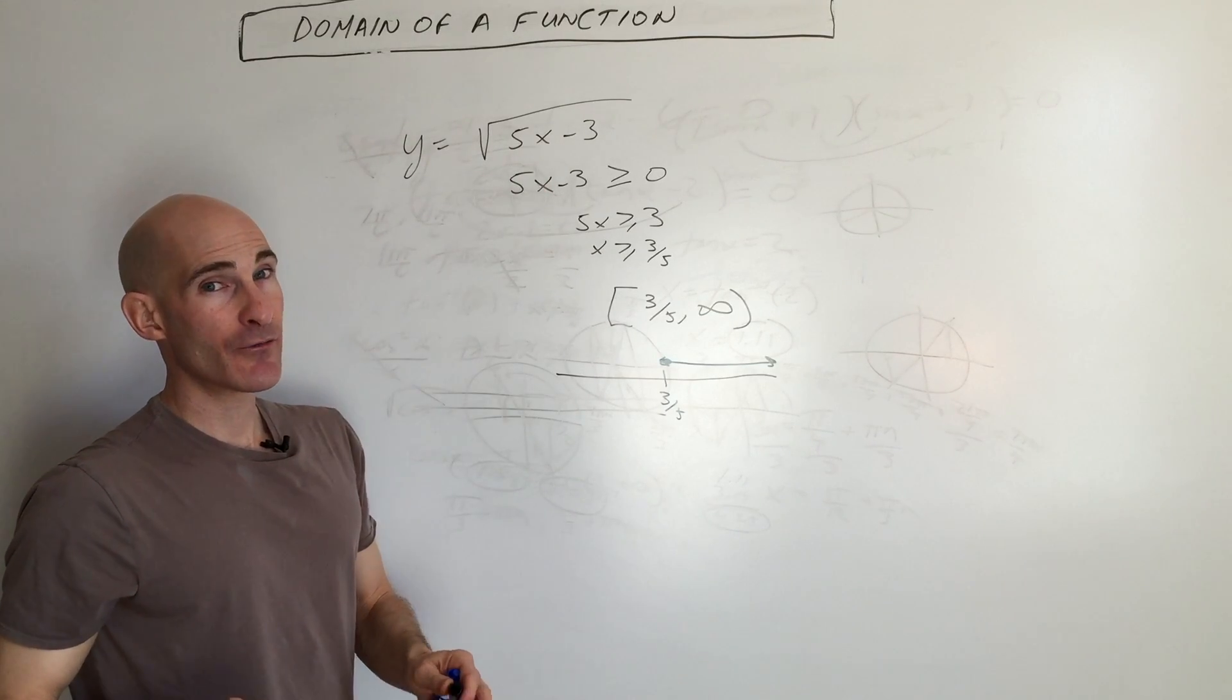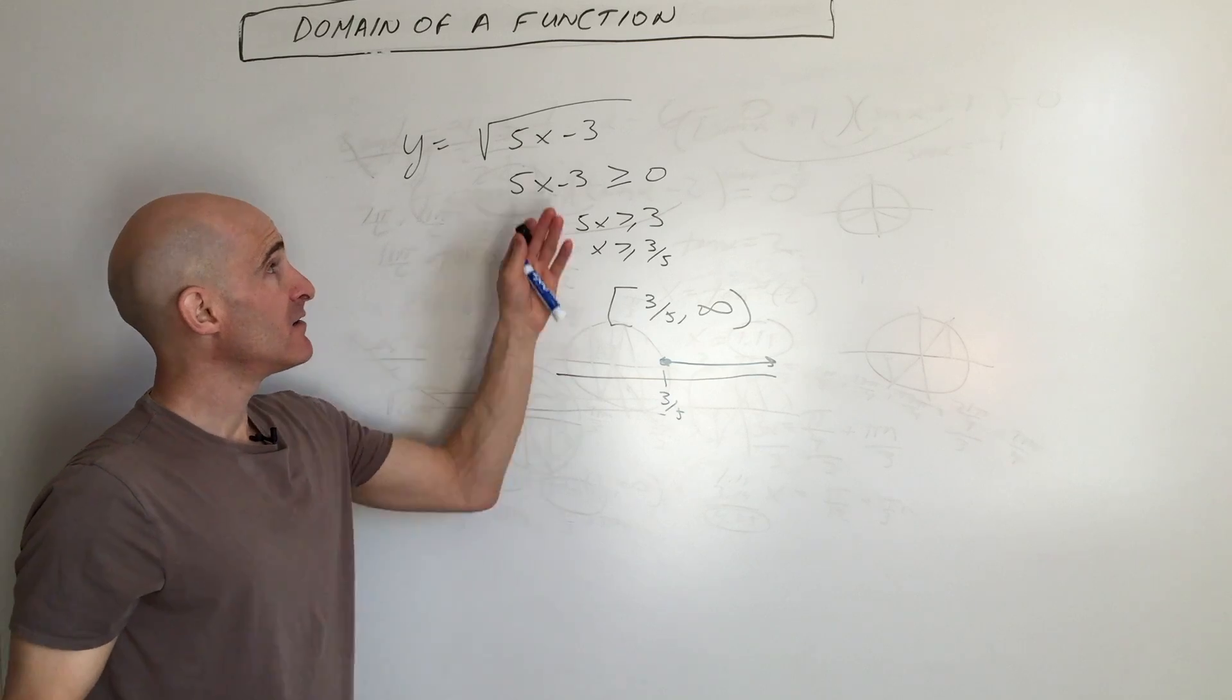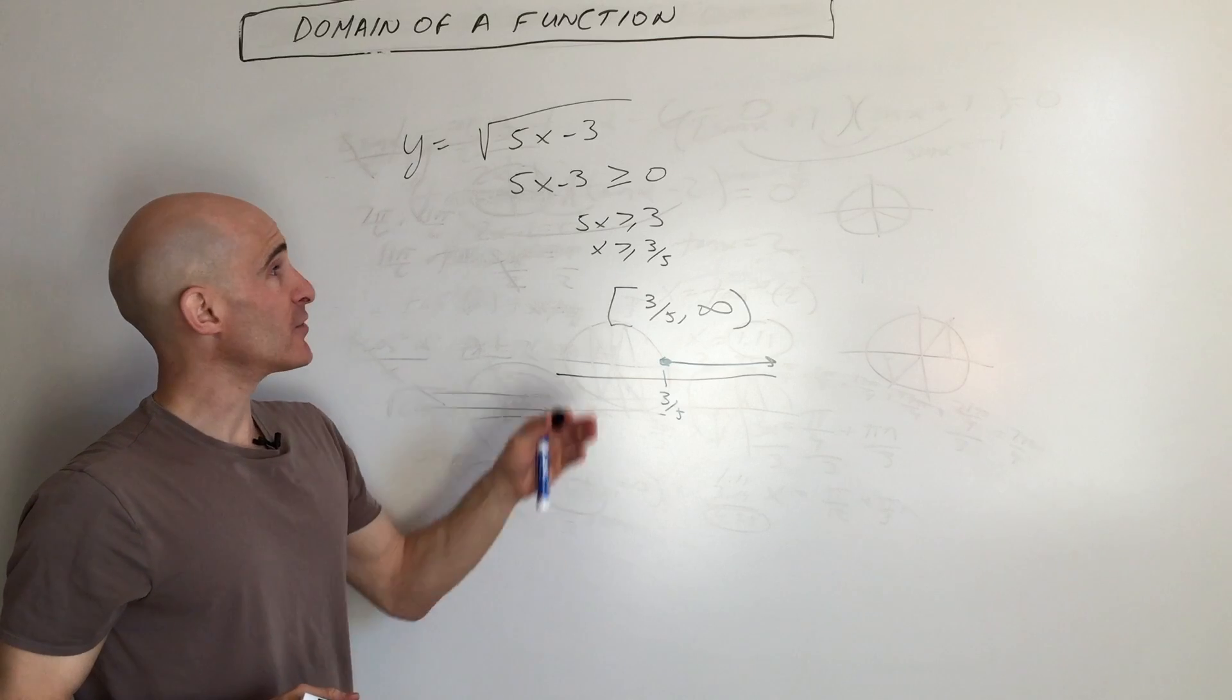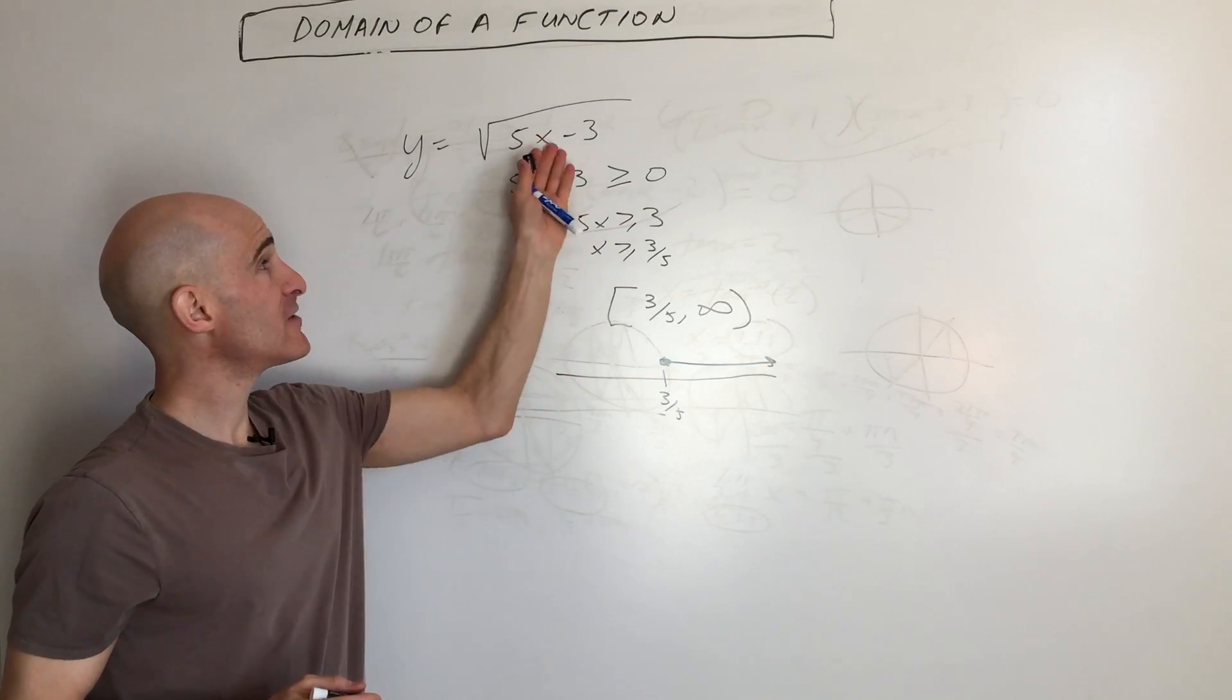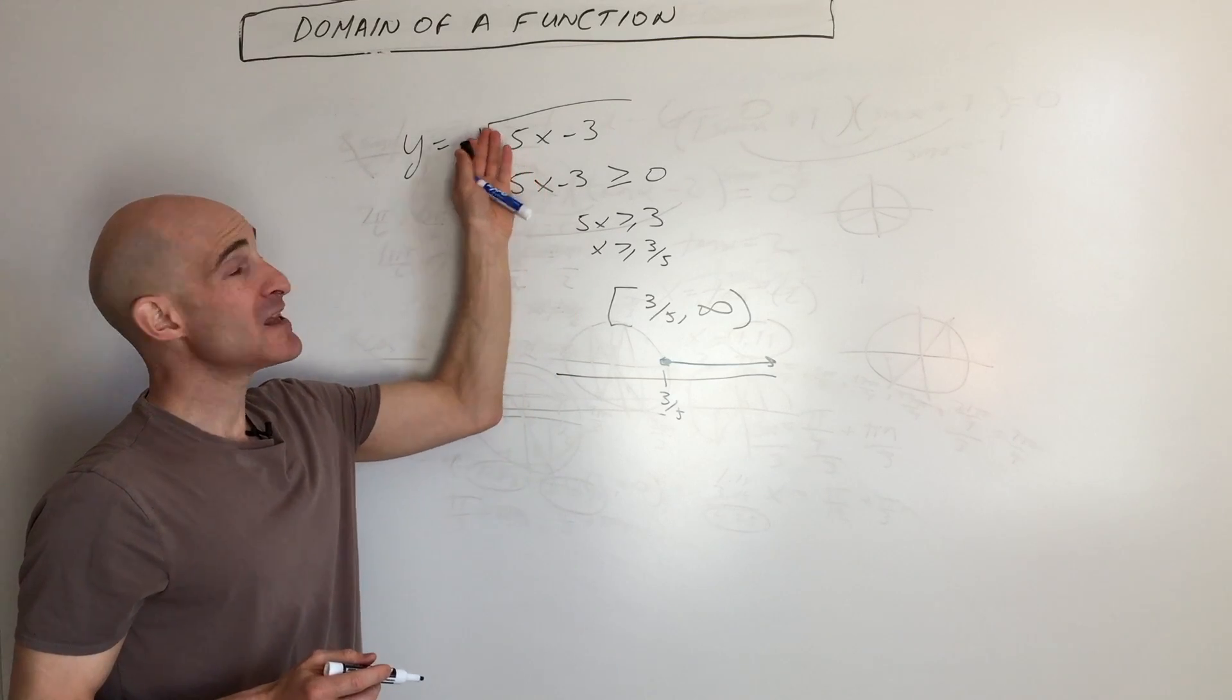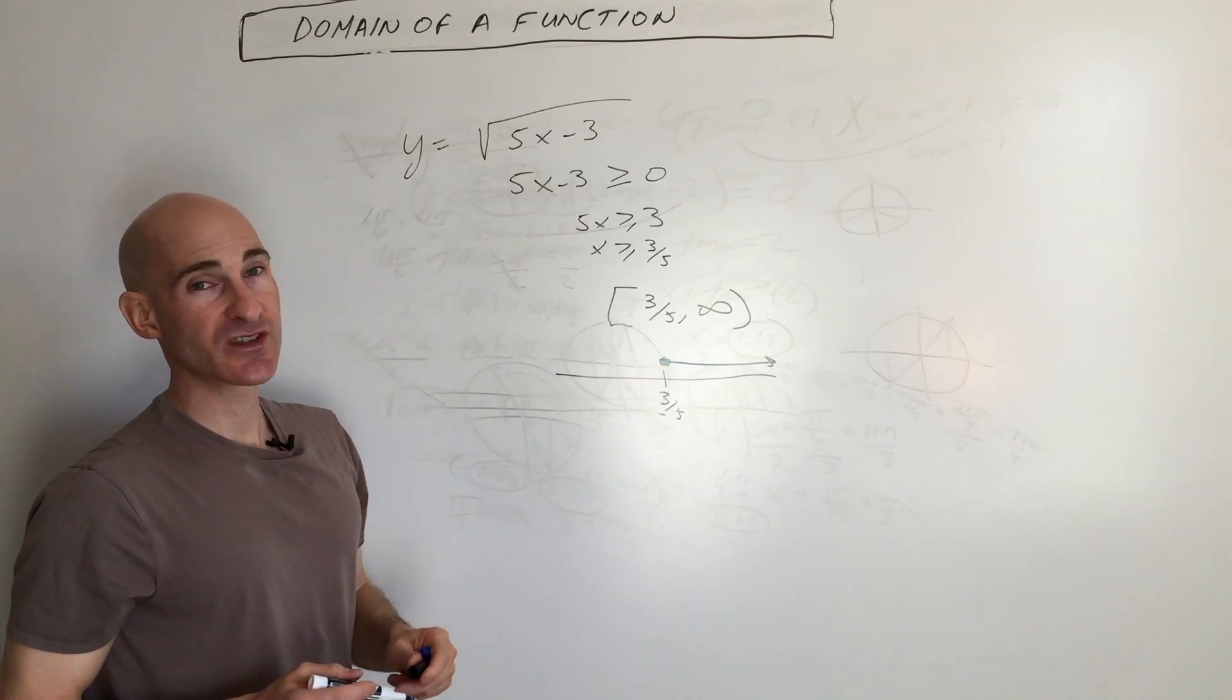So two things to pay attention for when you're looking at the domain. You can't divide by zero, and you don't want to take the square root of a negative number. So you just make an inequality and set whatever's underneath the radical greater than or equal to zero. This is for even roots. So square roots, fourth roots, sixth roots, like that.